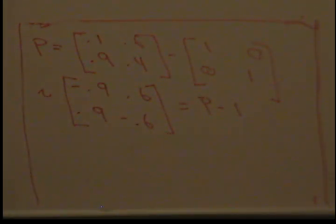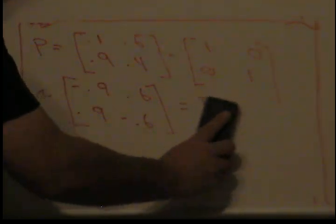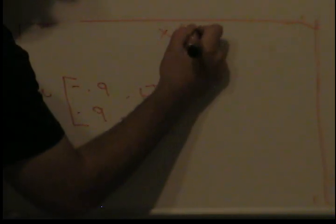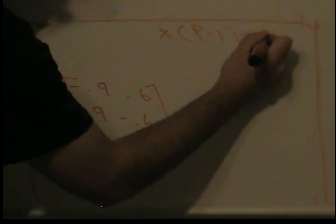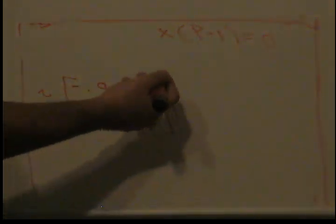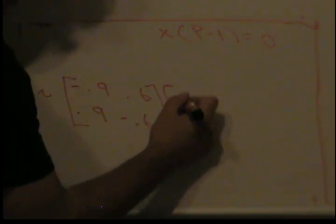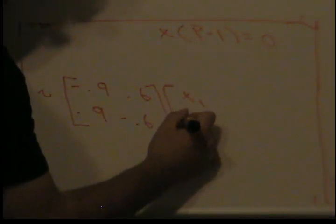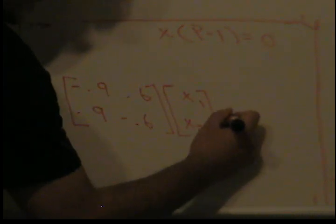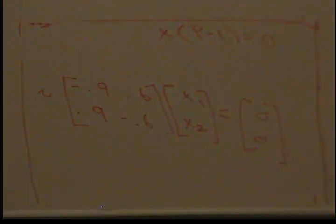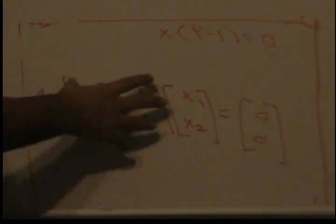Okay, from here let me go ahead and erase this top part. The equation was this: it's like a homogeneous equation. We're saying it equals 0. So if I do this, I call this X1, X2, it's equal to 0, 0.